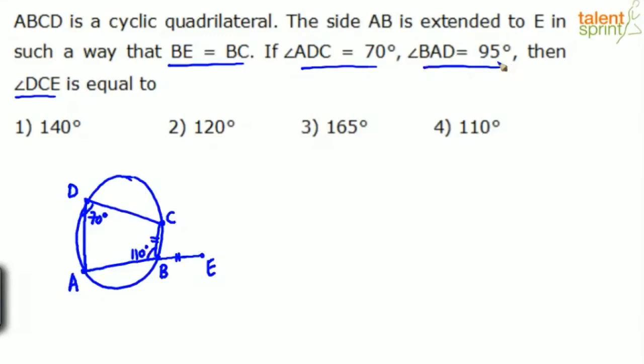Then next point says angle BAD is 95. This is angle A, 95. If this is 95, what should be angle C? Angle C should be 85 degrees. Why? Same argument, right? Opposite angles will be supplementary. So 95 plus 85 makes it 180 degrees. So we basically know all the four interior angles of this quadrilateral. And what else do we know? BE equals BC.